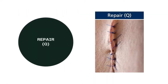We spoke about the root operation control in our previous video. Today we will talk about the root operation repair, which carries a character value of Q. Root operations are the most important aspect of building an ICD-10 PCS code. Remember, the root operation always defines the goal or the objective of the procedure.